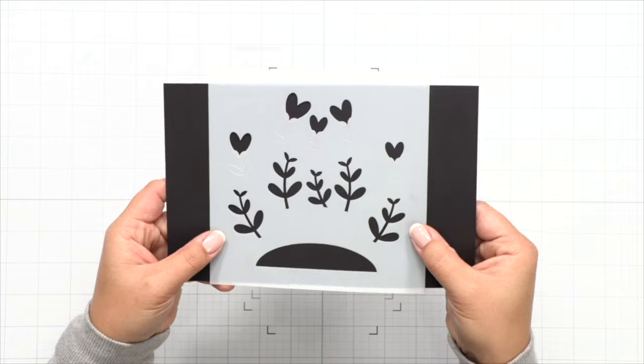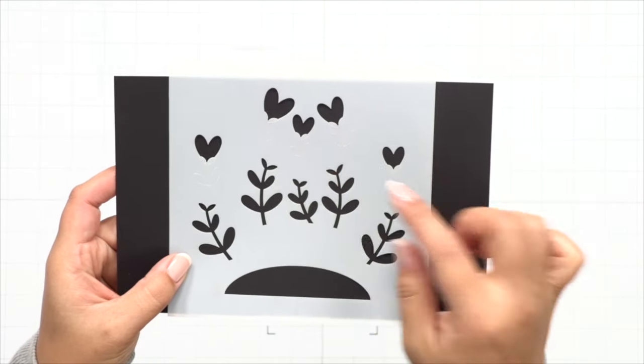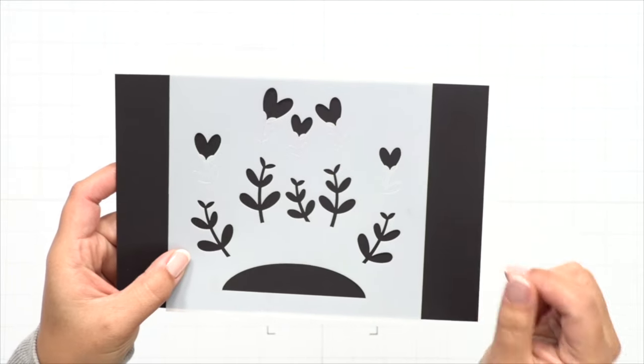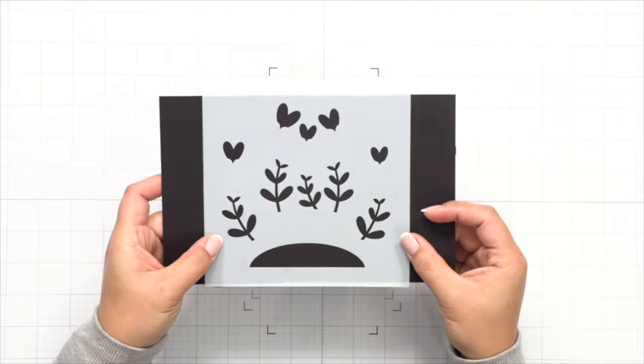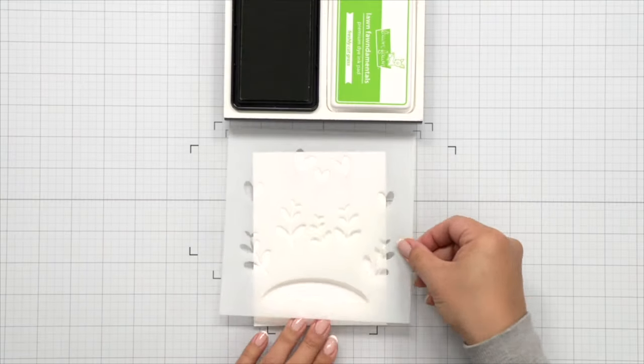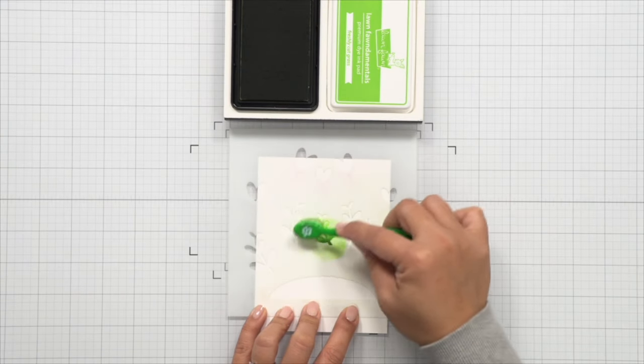So let's get started here with the newest product. We have the Heart Garden Stencil and this is very easy to line up if you've never used it before. We have a mound at the bottom, which I am not using because we're going to be covering that up with die cutting anyway, but then we've got some foliage and hearts that go at the top and they line up with some etching on the stencil.